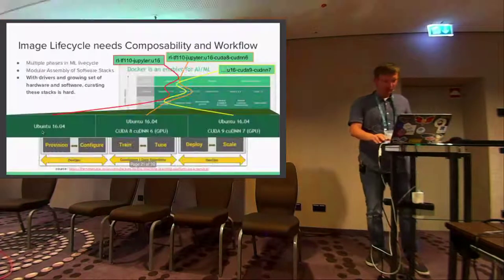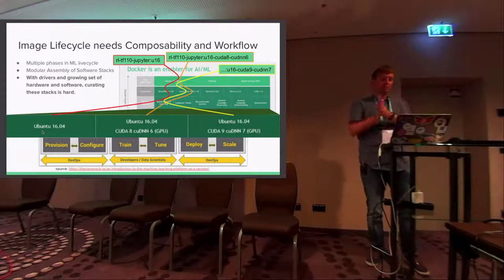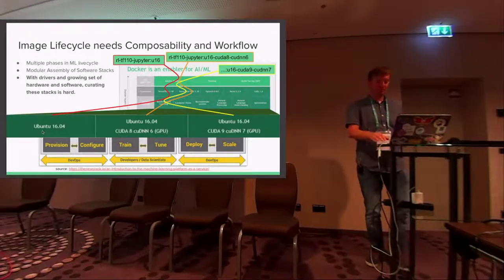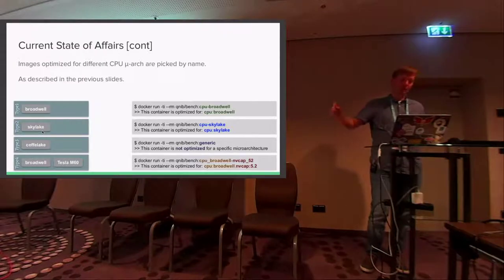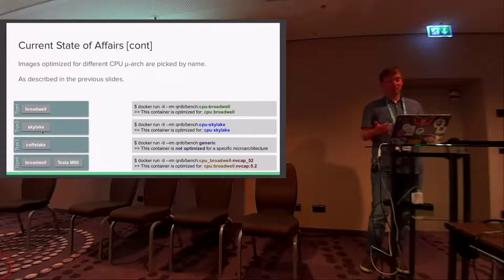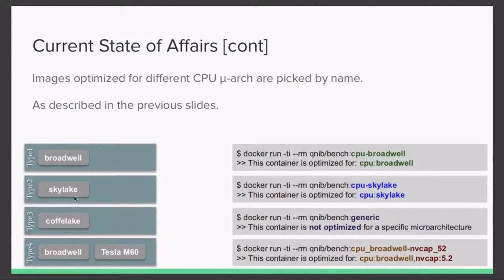Building on what was said before: having different images for different architectures requires different names, which is a cumbersome endeavor. If you want to handle this, you need different names and must come up with a naming scheme. After one year you'll have different naming schemes or different people with different opinions — so that's going to get ugly.